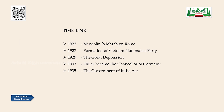Timeline of this lesson — important dates: 1922, Mussolini's march on Rome; 1927, formation of Vietnam Nationalist Party; 1929, the Great Depression; 1933, Hitler became Chancellor of Germany; 1935, the Government of India Act.